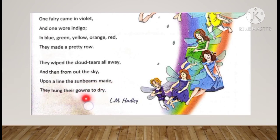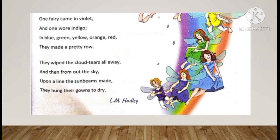'And they wiped the cloud tears all away, and then from out the sky upon a line the sunbeams made they hung their gowns to dry.' Kya hua: jab fairies aayin, unhon ne clouds ke aansu poche. Aur jo sun ki beams ne ek line bana di thi jo baadlon se nikal rahi thi, us par unhon ne apne gowns ko dry karne ke liye hang kar diya. Gowns geelay ho gaye thay. Is se jo poet batata hai: jo rainbow hota hai woh fairies apne gowns se banati hain.